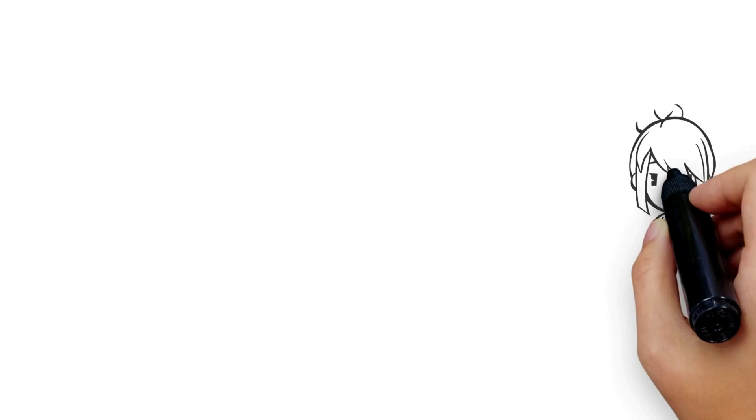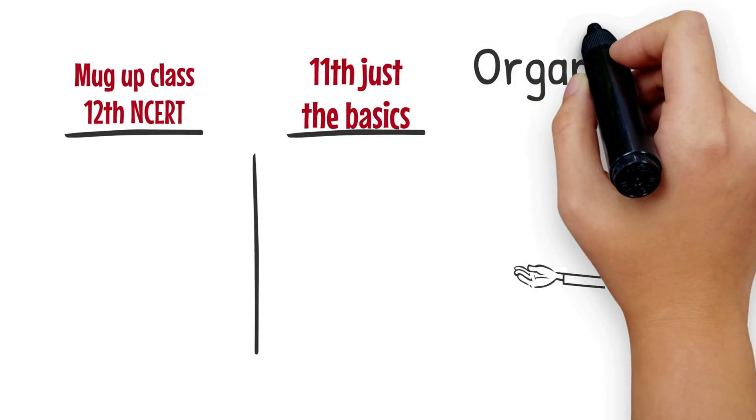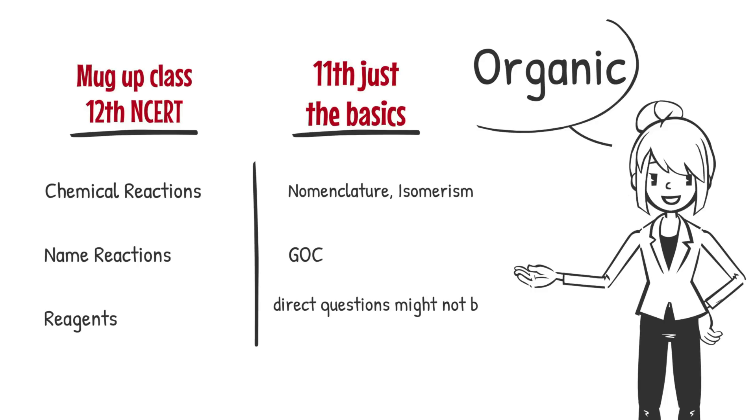Coming to organic chemistry. For organic, you have to mug up class 12th NCERT. The preparation methods of compounds, chemical reactions, name reactions, reagents, everything very well. With class 11th, just be prepared with the basics that is IUPAC, nomenclature, isomerisms and GOC because direct questions might not be there but you can expect a sub part from these chapters in most of the questions.